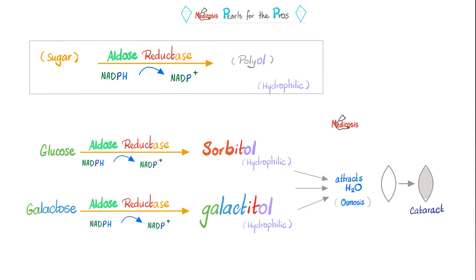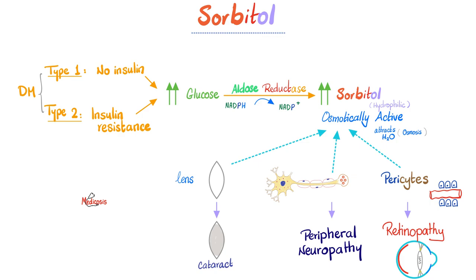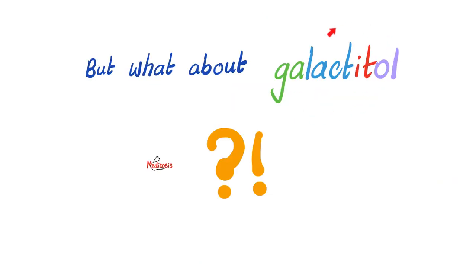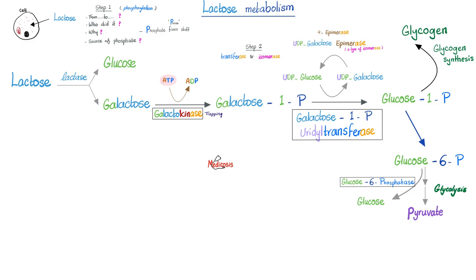Maybe the only thing more common would be errors of refraction. What did sorbitol do? Diabetic patients had too much glucose, too much sorbitol — osmotically active — pull water into the lens: cataract. Pull water into the nerve: peripheral neuropathy. Pull water into the pericytes in the retina: retinopathy. How about galactitol, which comes from galactose, which comes from lactose? It can also do the same thing. So let's talk about lactose metabolism.